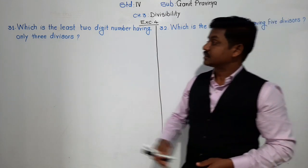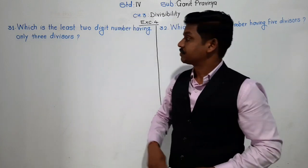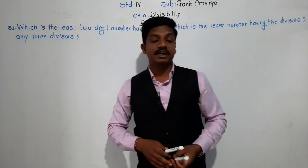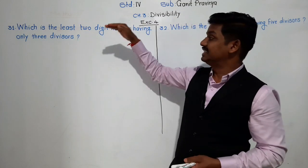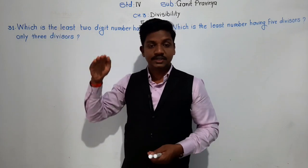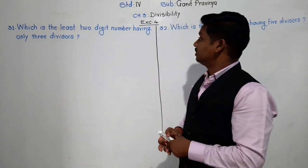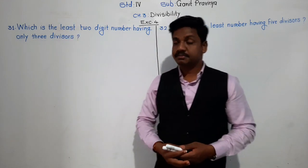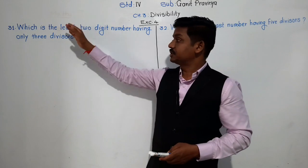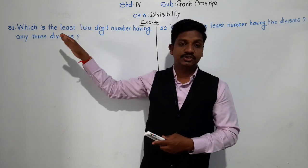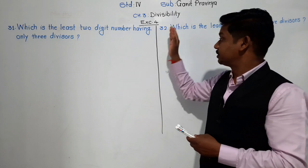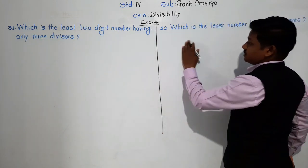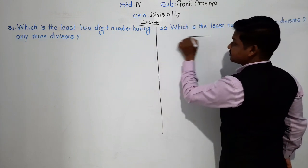Now see question number 31: Which is the least two-digit number having only three divisors? Least means smallest. So, which is the smallest two-digit number having only three divisors? Before finding the solution for this question, I am giving one pattern of numbers — this is not the answer, just I am showing it here.